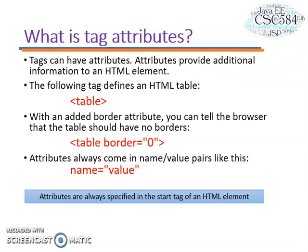Now let's look at tag attribute. Tag attributes provide additional information to an HTML element. For example, the table tag defines an HTML table. We add border attribute to the table tag. So attributes should always come in name or value pairs like the example.